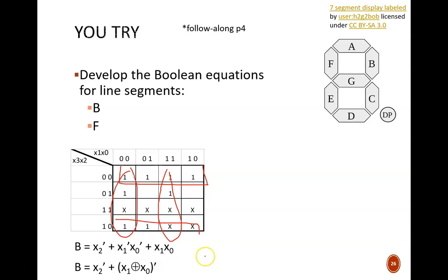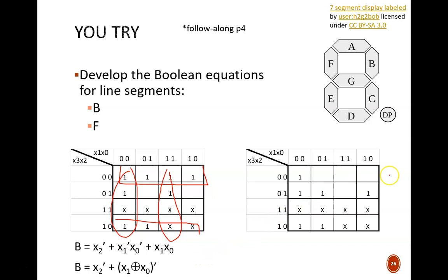My K-map for F is shown here, with the resulting equation below. We could continue this approach to find equations for all seven of the segments, and then we can build a circuit that connects the four input bits to those seven output lights. This would complete a binary to seven segment display decoder. Remember that decoder, in general, just means a device that goes from binary to some other form.